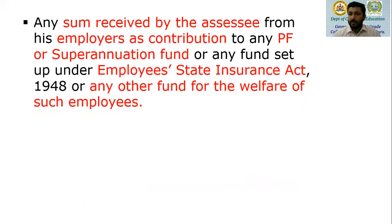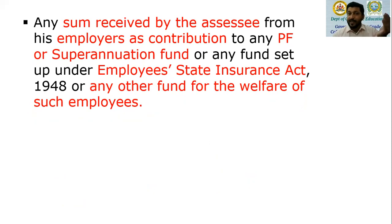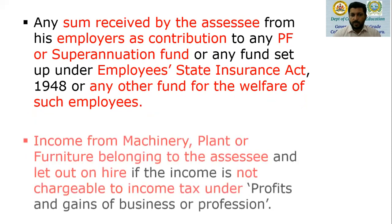Then, any sum received by an assessee from his employer as contribution to any provident fund, superannuation fund, or any fund set up under the ESI — Employee State Insurance Act 1948 — or any other fund for the welfare of such employees. If the assessee is receiving such contributions from the employer, that will not be taken as salary income; rather, it will be considered as other sources income.